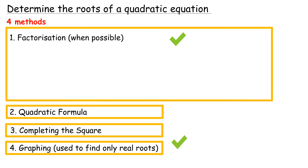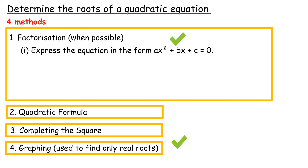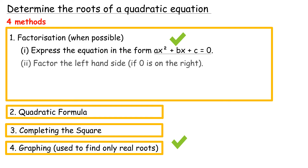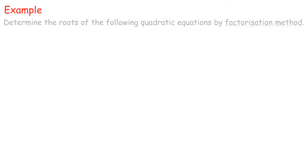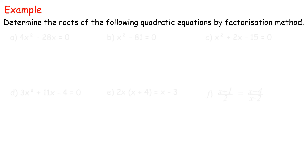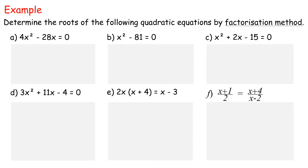In the factorization method, the steps are as follows: 1. Express the equation in the form ax² plus bx plus c equals 0. 2. Factor the left-hand side, if 0 is on the right. 3. Set each of the two factors equal to 0. 4. Solve for x to determine the roots. Example: determine the roots of the following quadratic equations by the factorization method.